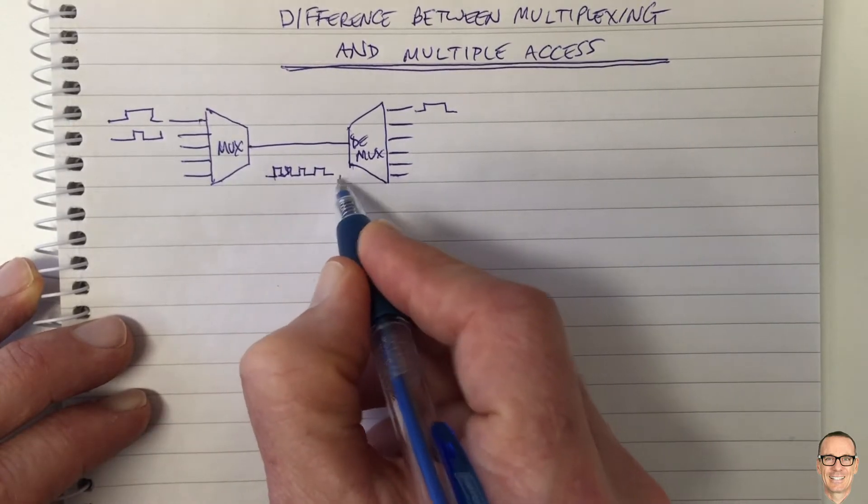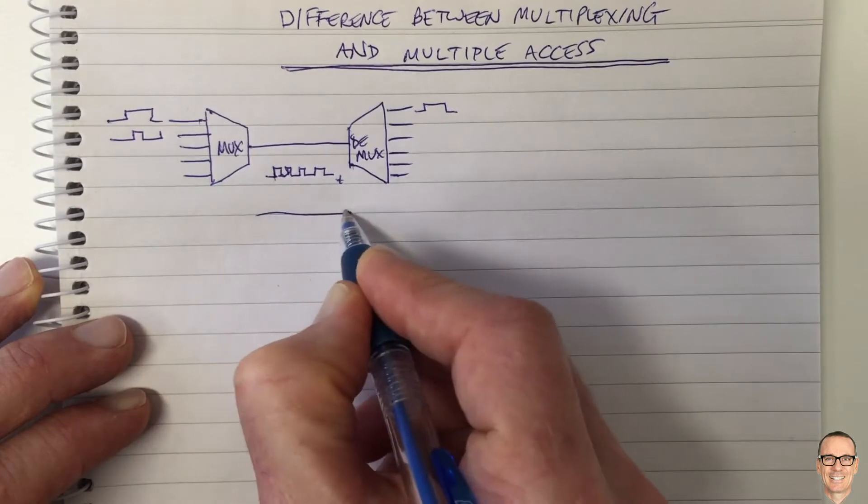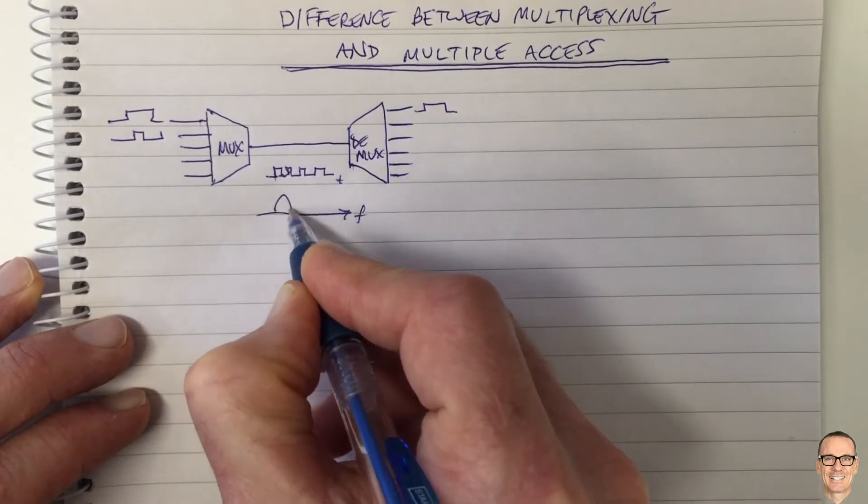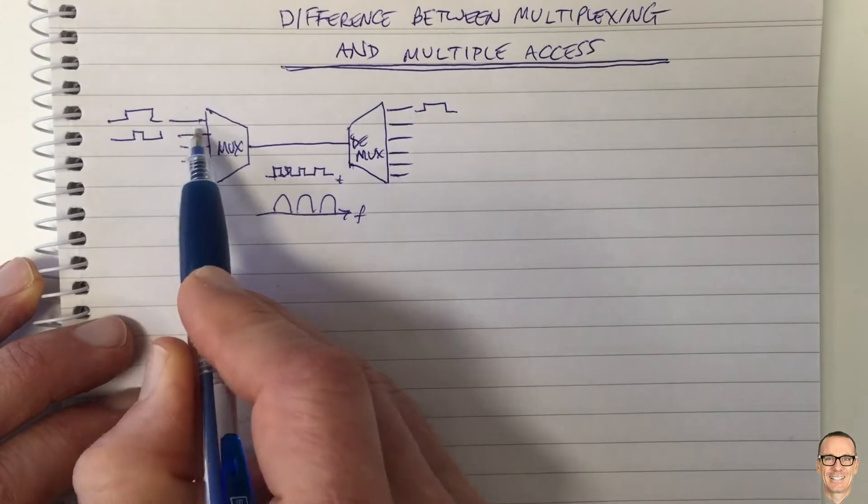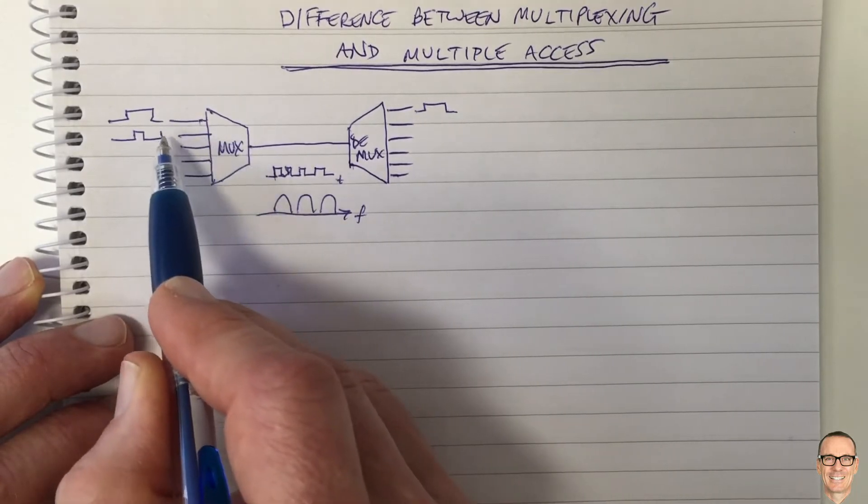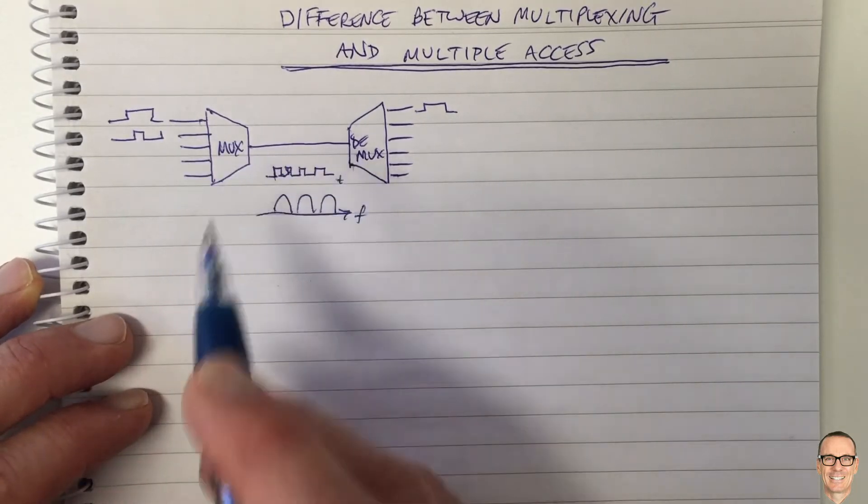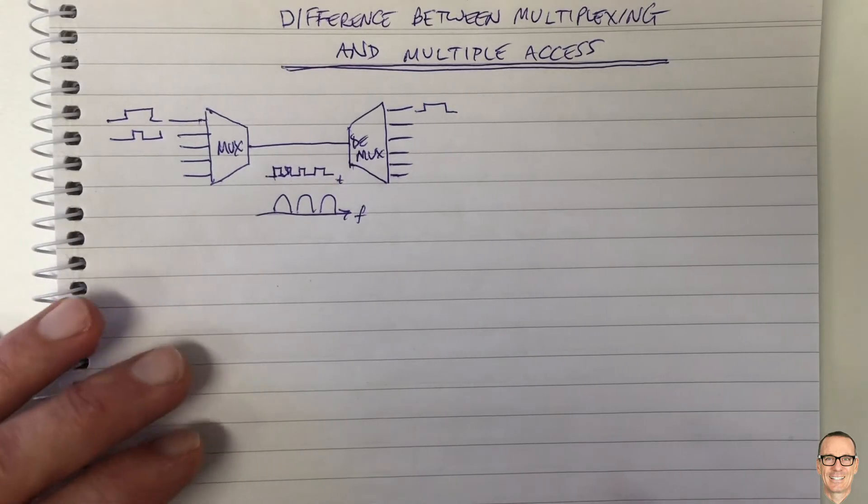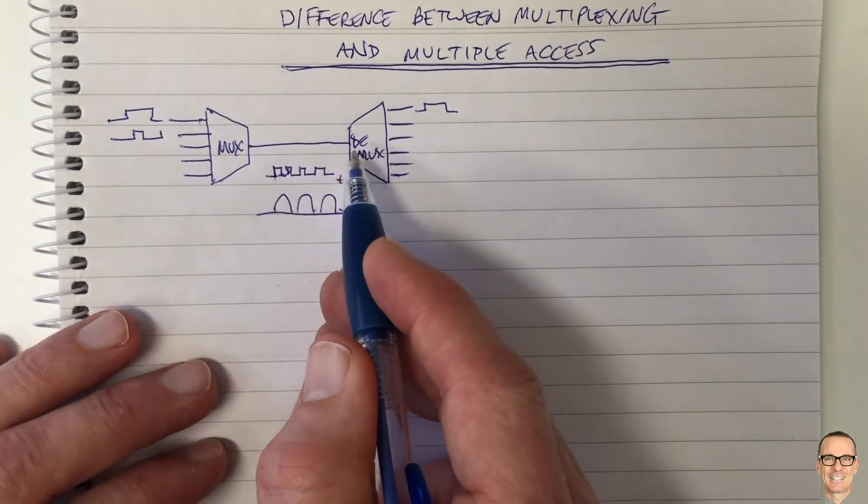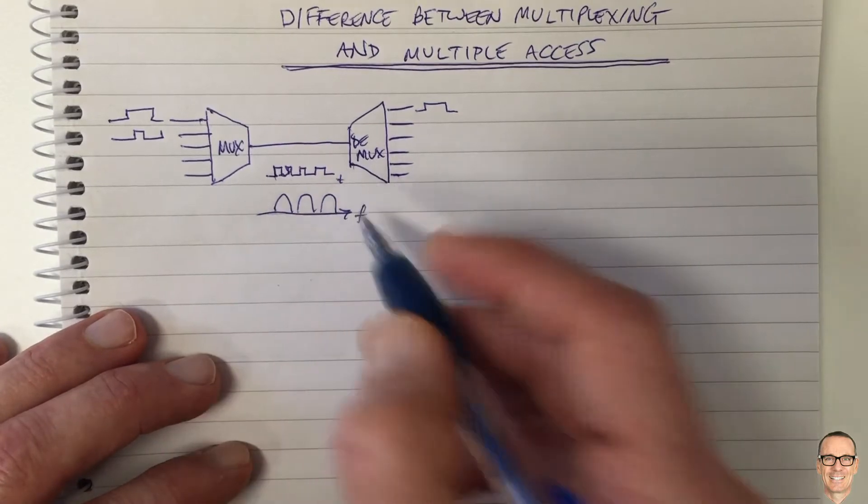Or we could divide that in time, or we could divide up the frequency and give each their own frequency. These come in on different frequencies in optical fibers, different colors of light, and we put them all multiplexed over the high rate optical fiber. So this is multiplexing.